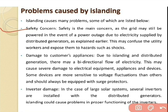The second problem is damage to the customer's appliances. Due to islanding and distributed generation, there may be a bi-directional flow of electricity — one power flow from the PV side and another from the grid side. This bi-directional power flow to the load side may cause severe damage to electrical equipment such as transformers, circuit breakers, and relays connected in the system.